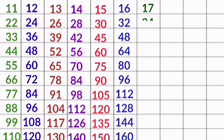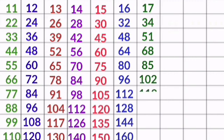17 1s are 17, 17 2s are 34, 17 3s are 51, 17 4s are 68, 17 5s are 85, 17 6s are 102, 17 7s are 119, 17 8s are 136, 17 9s are 153, 17 10s are 170.